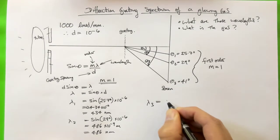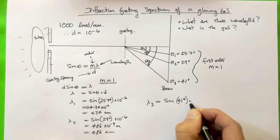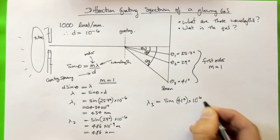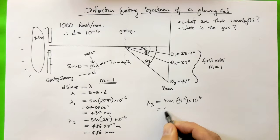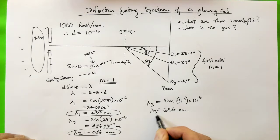And then, finally, lambda three is the sine of 41 degrees times ten to the minus six. And that gives us 656 nanometres. So the question now becomes, what is this gas? We've got lambda one, lambda two, and lambda three. So those are our three wavelengths.